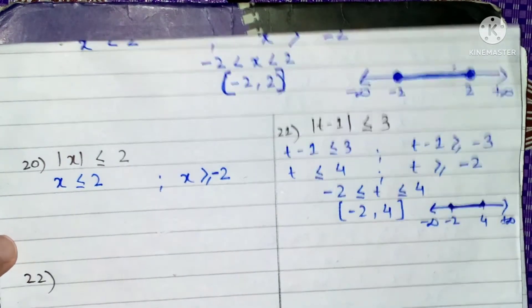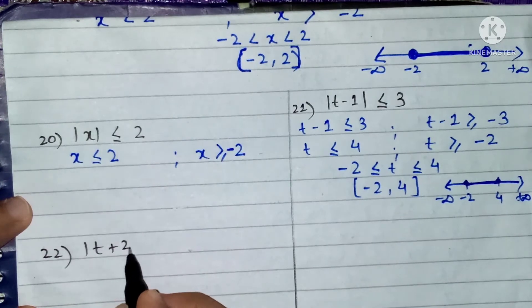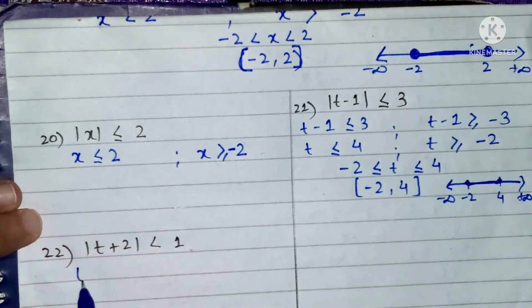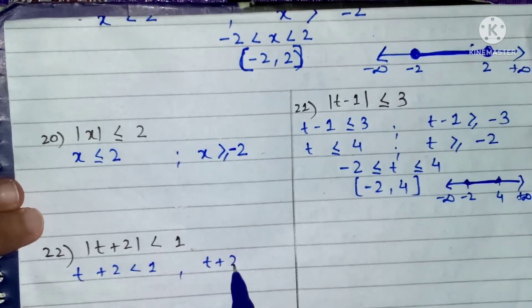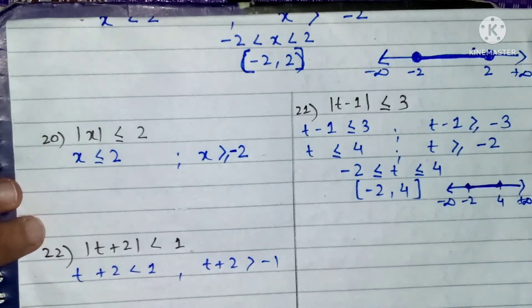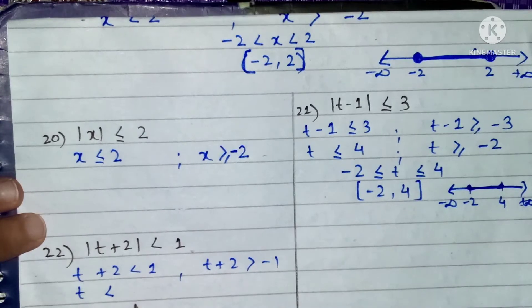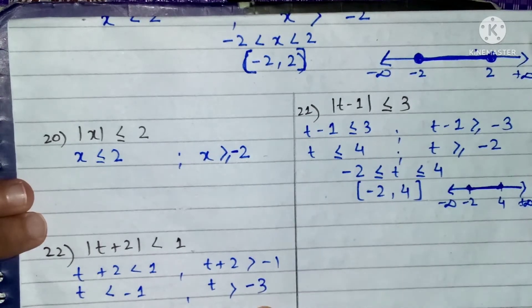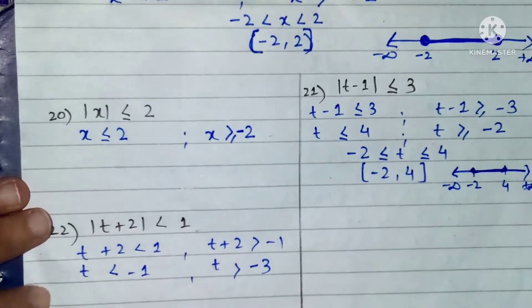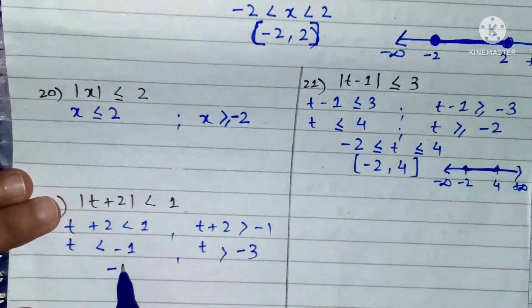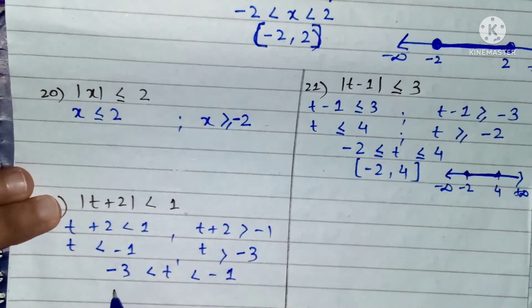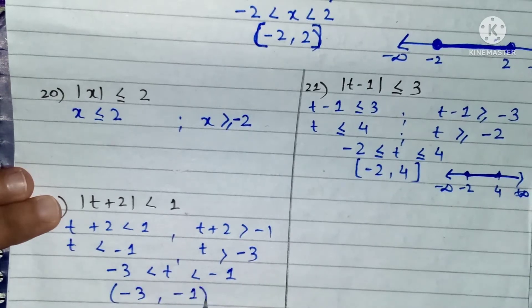Question number 22: the absolute value of t plus 2 is less than 1. We open the mod: t plus 2 less than 1, and t plus 2 greater than minus 1. Solving: t less than 1 minus 2, which is minus 1. And t greater than minus 1 minus 2, which is minus 3. So the interval is minus 3 less than t less than minus 1, giving the open interval (minus 3, minus 1).